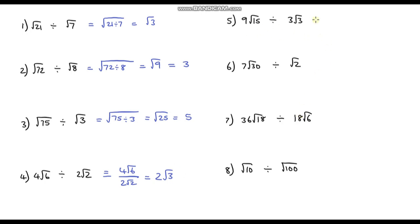Question 5: writing as a fraction, this is 9 root 15 over 3 root 3. Nine divided by 3 is 3, and root 15 divided by root 3 is root 5. So the answer is 3 root 5.